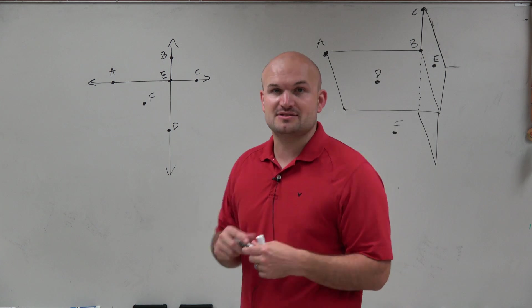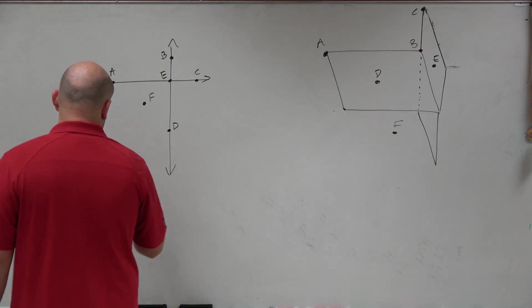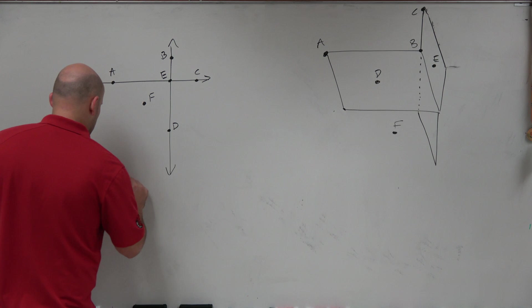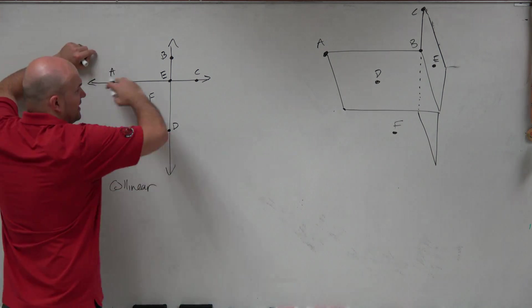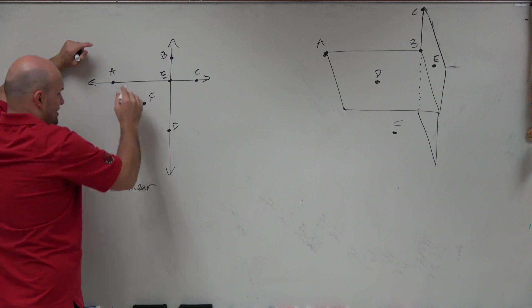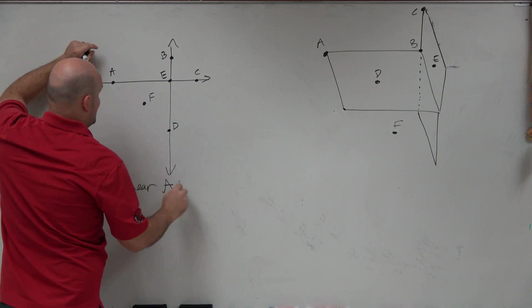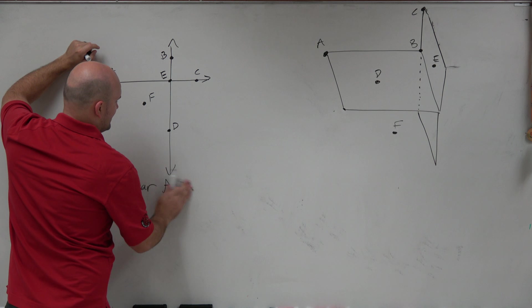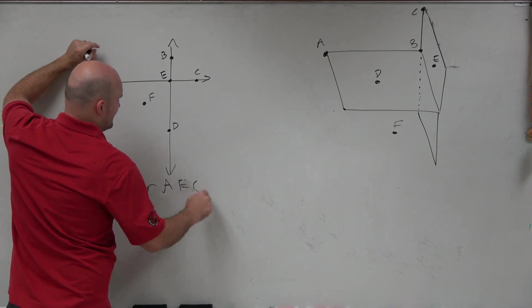I'm going to write down some points that are collinear. So here is collinear. Collinear points would be all the points that lie on this line right here, which would be A—I'm sorry, not A—A, E, and C.